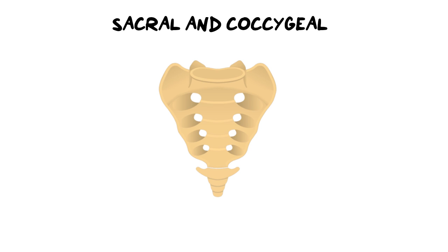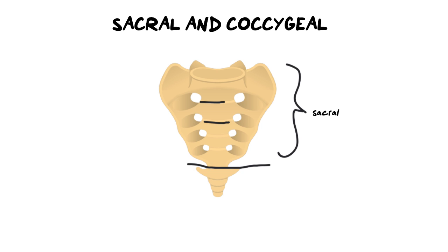The final component of the vertebral column is the sacral and coccygeal bones. The sacral bones are fused — stuck together — and you can see the fusion lines running through them. The coccygeal bones at the bottom, often called the coccyx or tailbone, are also fused together.